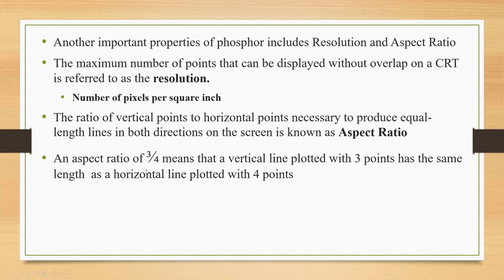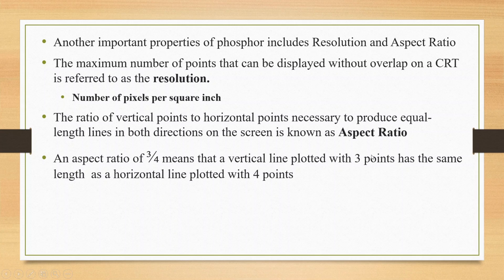An aspect ratio of 3 by 4 means that a vertical line plotted with 3 points has the same length as a horizontal line plotted with 4 points. The ratio of vertical points to horizontal points necessary to produce equal-length lines in both directions on the screen is known as the aspect ratio.